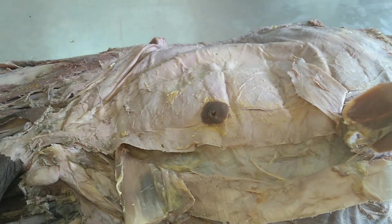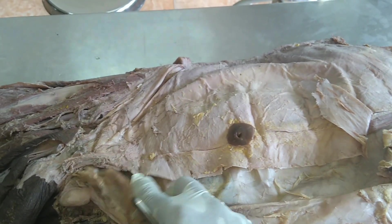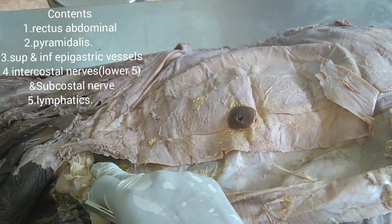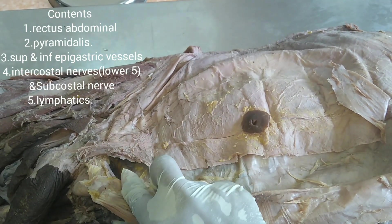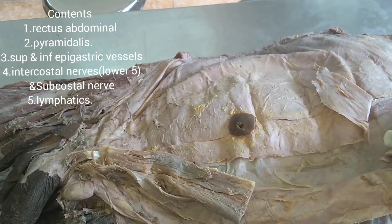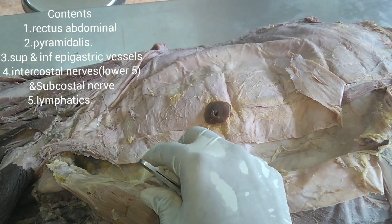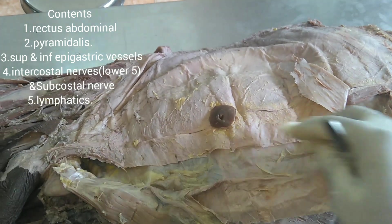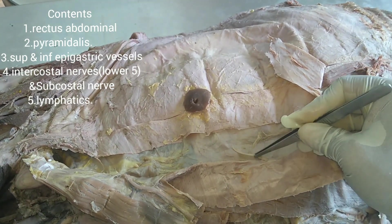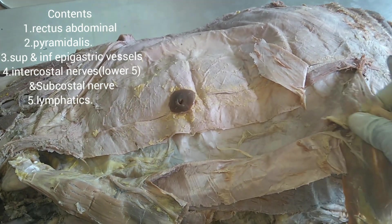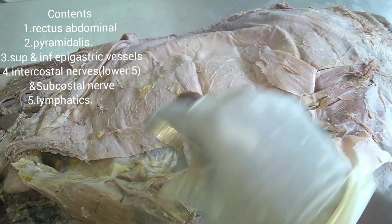To summarize the contents: the rectus abdominis muscle and the pyramidalis muscle are the two muscles; the superior and inferior epigastric arteries are the two arteries; the superior and inferior epigastric veins; the intercostal nerves along with the subcostal nerve; and lymphatics. These are all the contents of the rectus sheath.